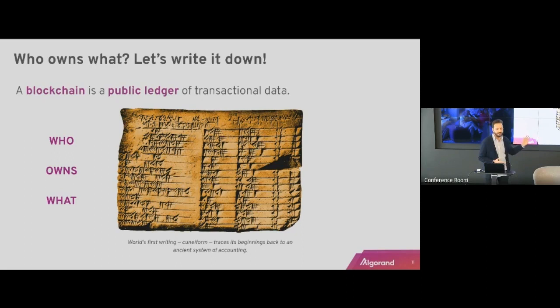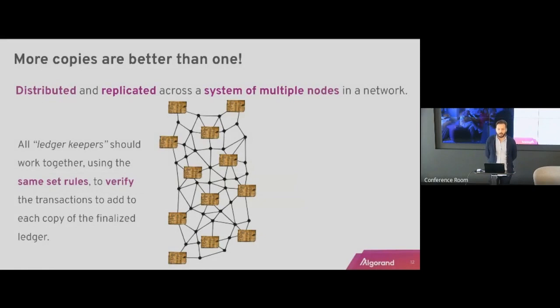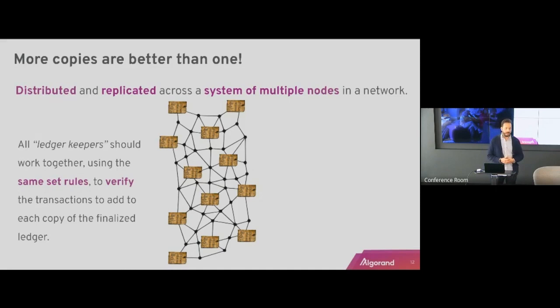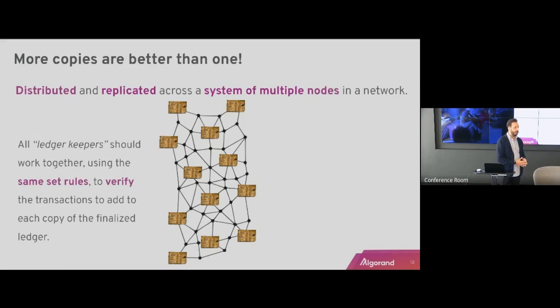Since this ledger tracks a really important truth, we want to replicate it — more copies are better than one. We end up with a distributed and replicated ledger across a system of multiple nodes. All those ledger keepers should work together following the same set of rules to verify what is written into the ledger, and to determine: am I allowed to write this and spread this word into the system?